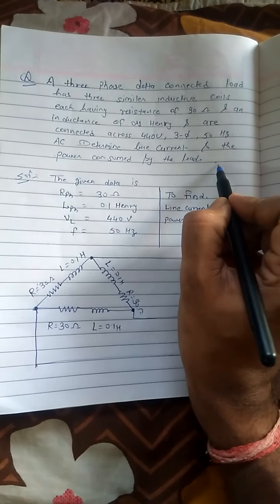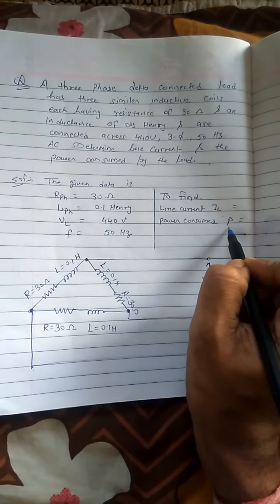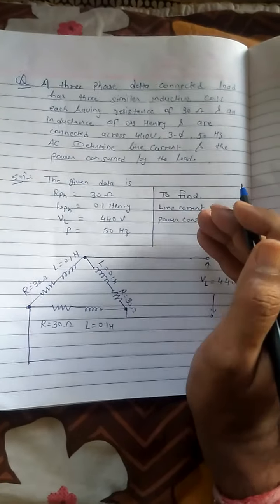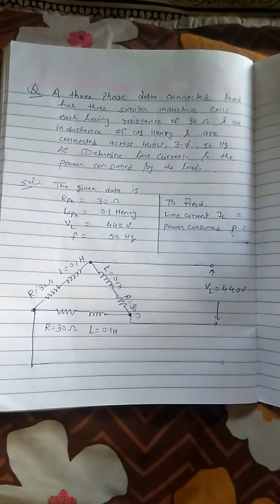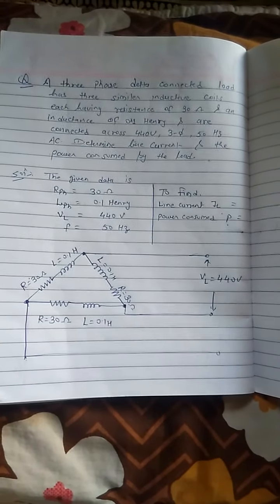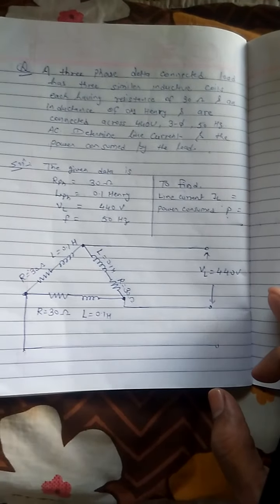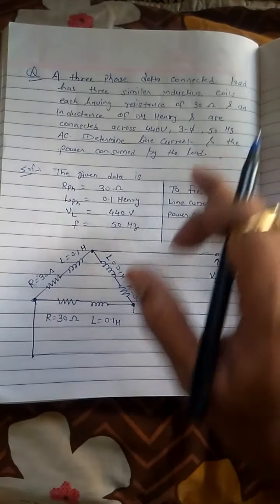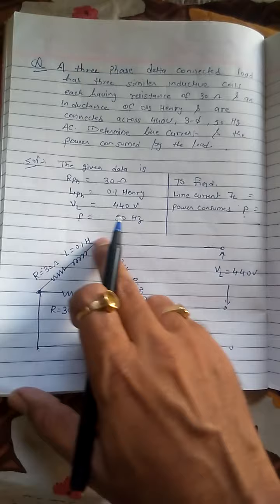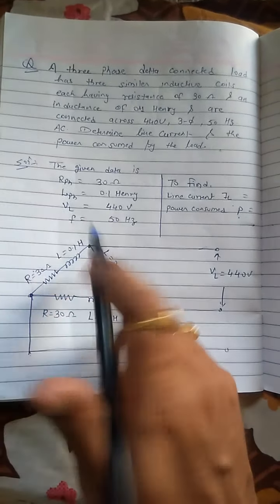We need to determine line current and the power absorbed by the load, P. We will use the approach from previous numericals. This is a delta connected system — according to the given data, here is the circuit.